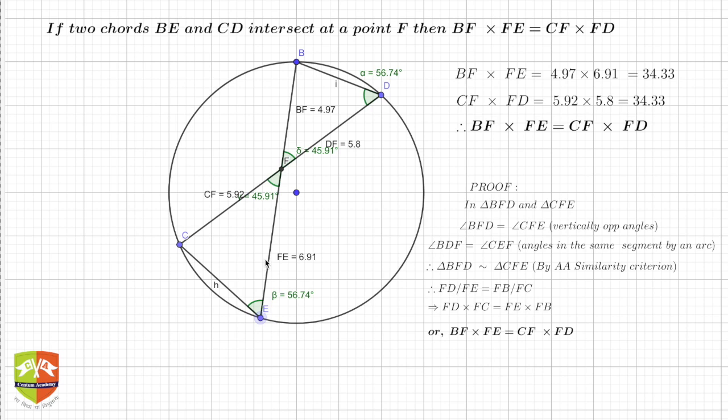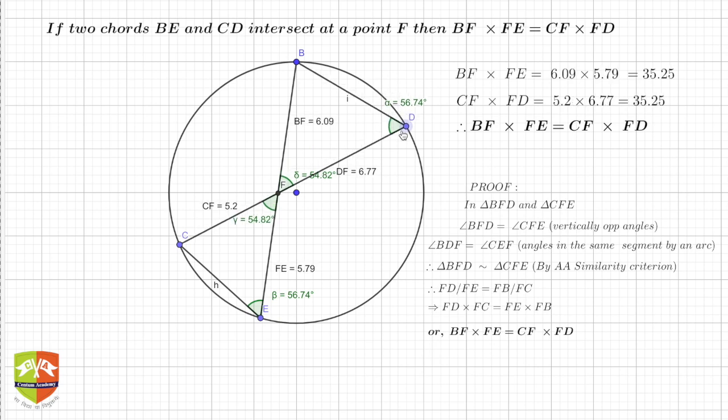We know that if two triangles are similar, their sides are proportional. Hence I can write FD/FE = FB/FC—these are the corresponding sides. So FB/FC, corresponding sides ratios are equal. I can write that, and then you cross multiply to get the desired result: BF × FE = CF × FD. So what did we learn? We learned that if two chords intersect each other, then the products of their segments are equal.